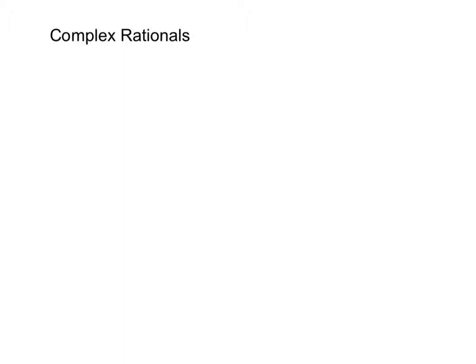An example of a complex fraction or a complex rational would be something like 1 plus 1 third divided by 2 fifths minus 3 sevenths. That's just an example with numbers. But let's see what it works out to be. The reason this is complex is because it's a fraction within other fractions.